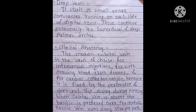The ideal vein for intravenous injection is the median cubital vein — this is an MCQ point. Regarding the deep vein, it starts as small venae comitantes running on each side of digital veins and these continue proximally as the superficial and deep palmar arches. The median cubital vein is the vein of choice for intravenous injection, withdrawing blood from donors, and cardiac catheterization because it is fixed by the perforator vein and does not slip away during piercing.